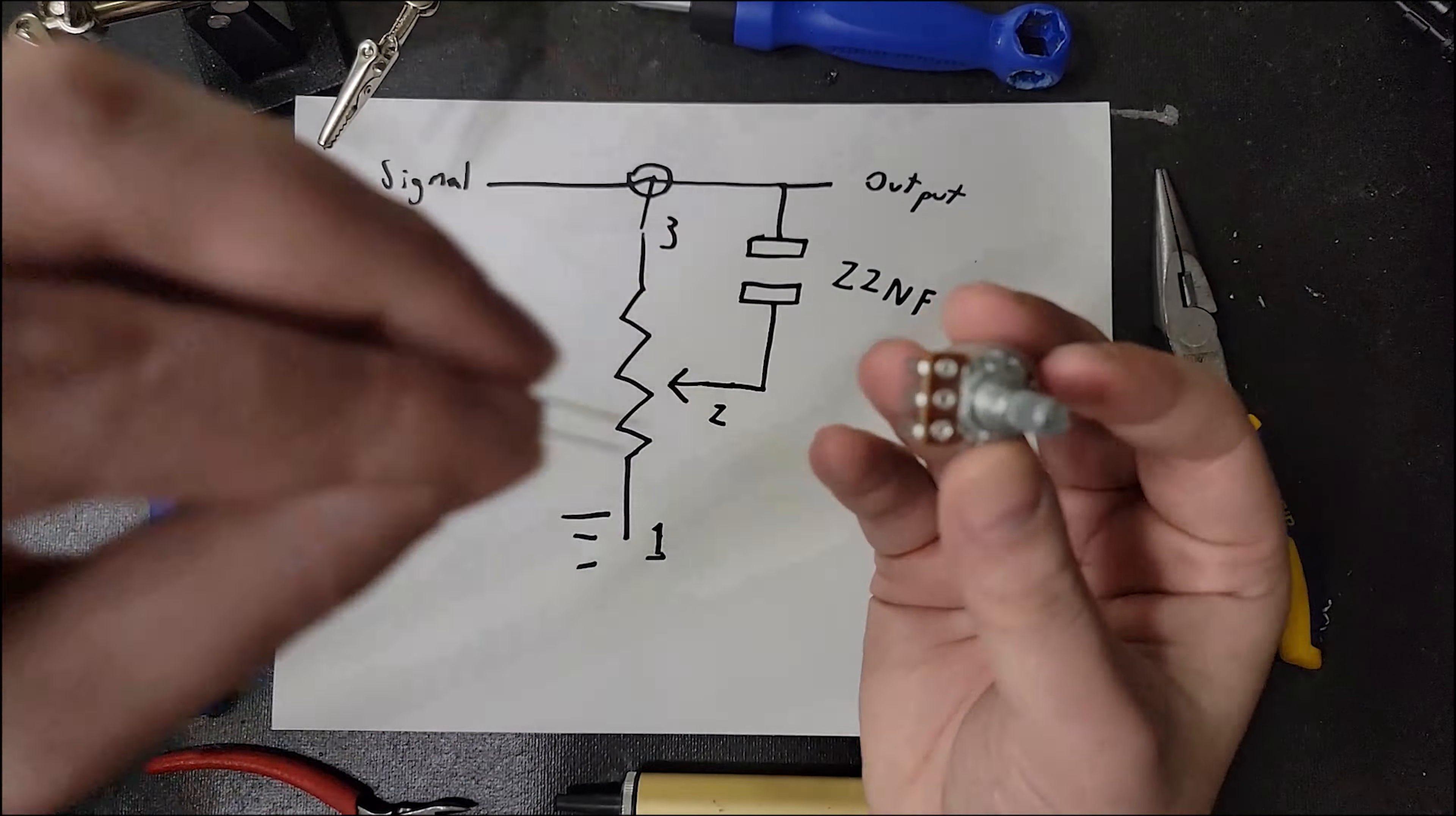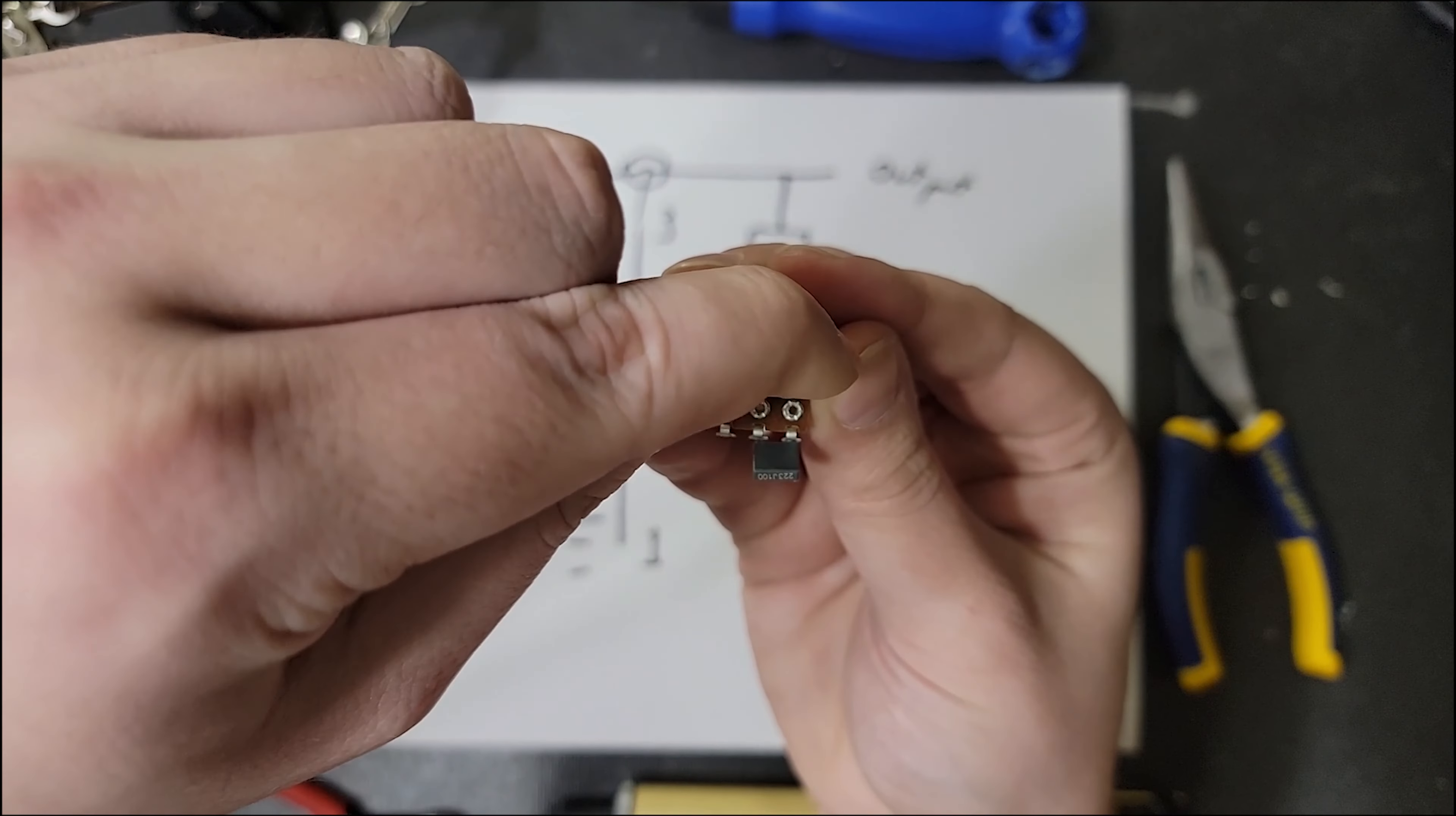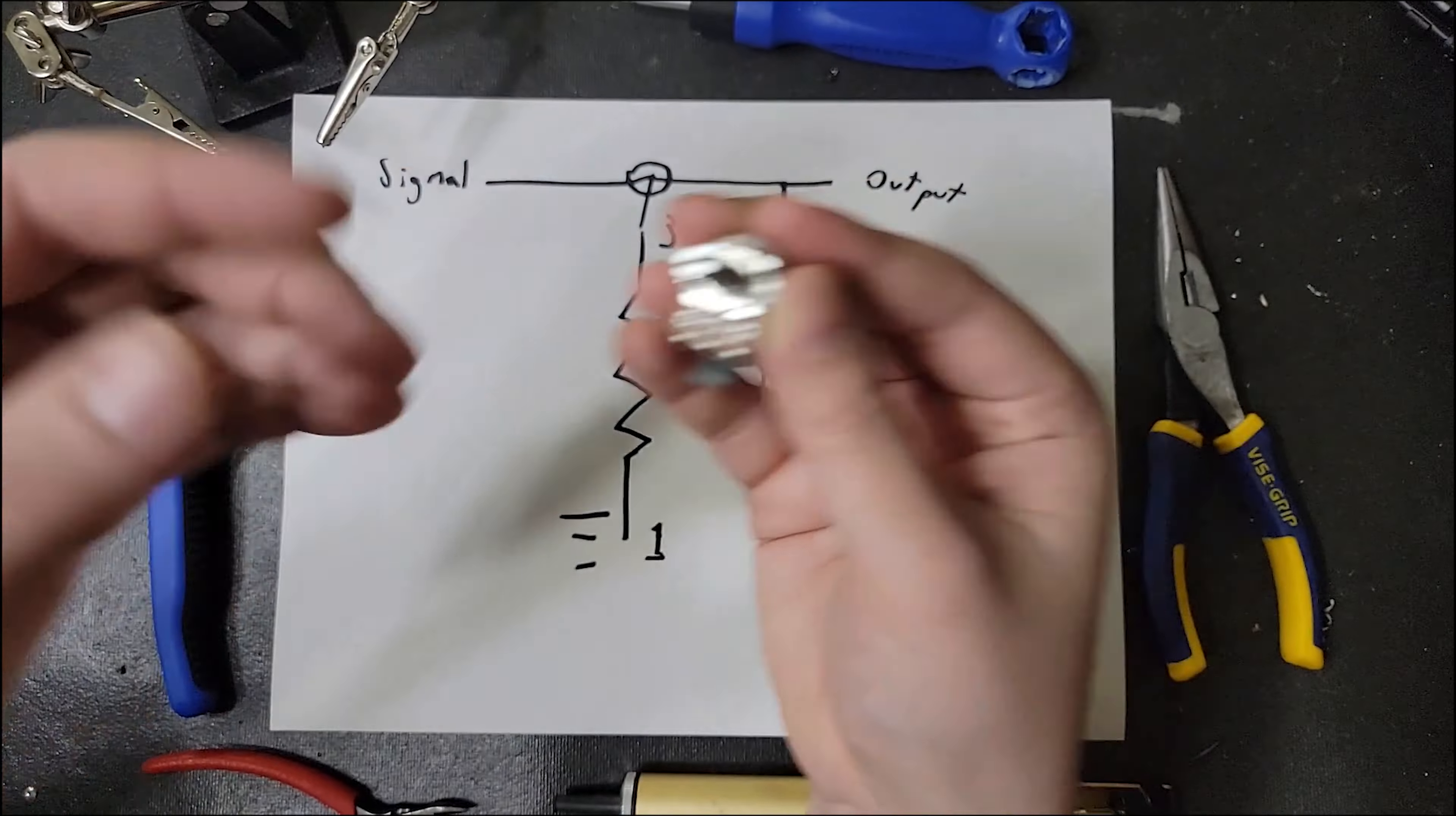Now when the potentiometer is turned to the left, the capacitor will only allow the high frequencies to be grounded. But when turned to the right, pin 1 is taken out of the equation, and therefore, nothing is grounded.